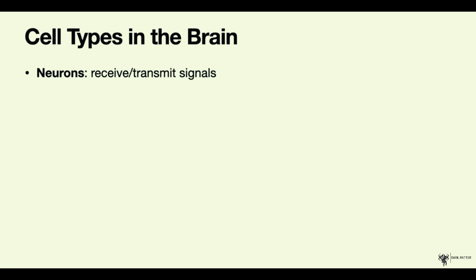First and foremost, the neurons are the functional units of the brain. Because of their unique electrophysical properties, they are capable of transmitting signals and information throughout the nervous system, or what we call electric impulses.